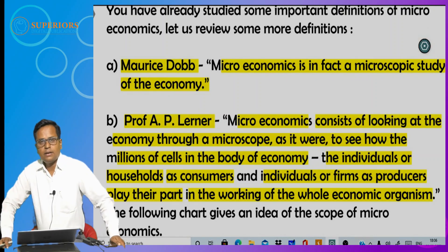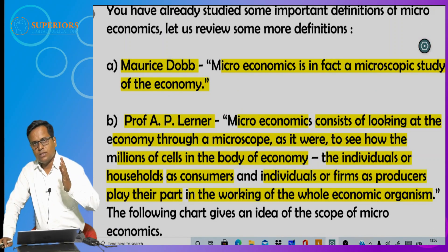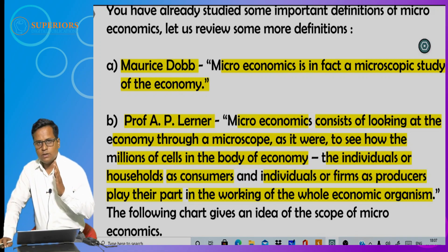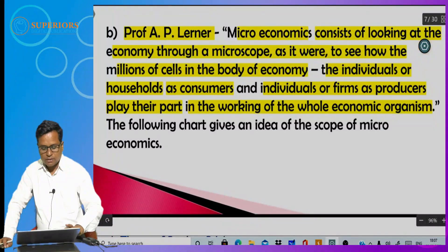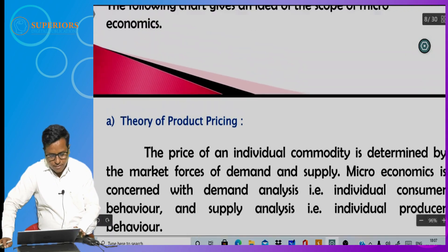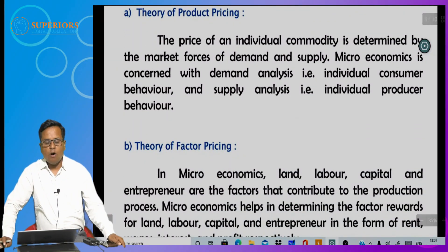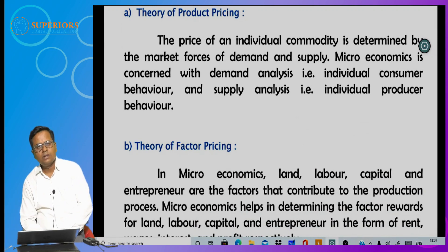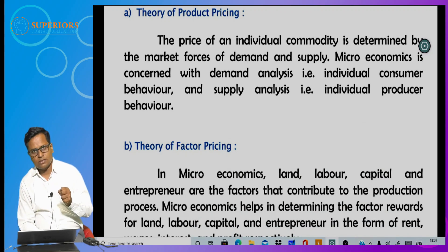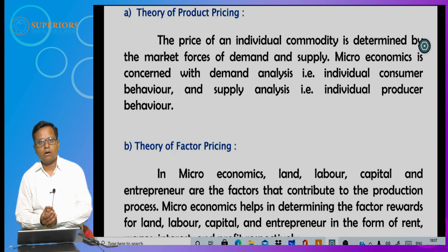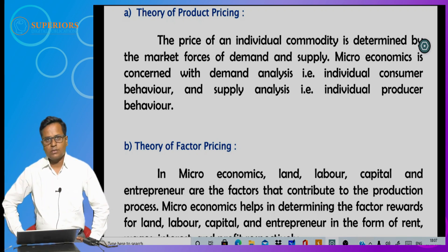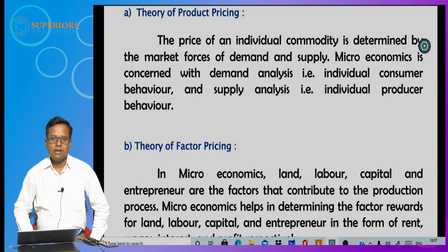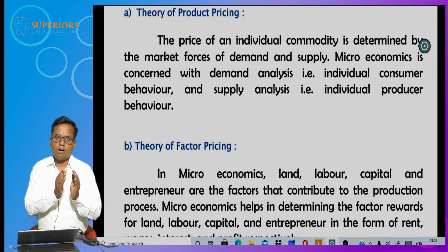In summary, microeconomics is the branch of economics which deals with individual economic units such as individual consumers, individual producers, individual firms, industries, individual prices, individual wages, and incomes. The scope of microeconomics is limited as compared to macroeconomics, because macroeconomics deals with the behavior of the entire economic system, whereas micro deals with a particular part of the economic system.